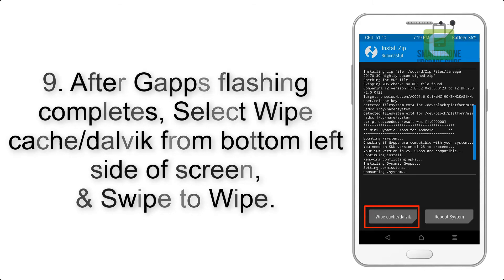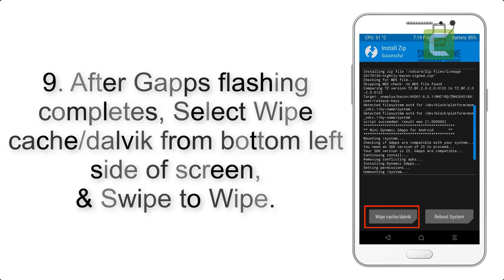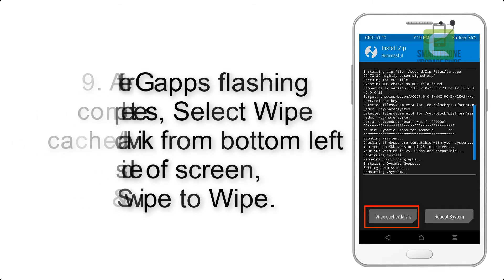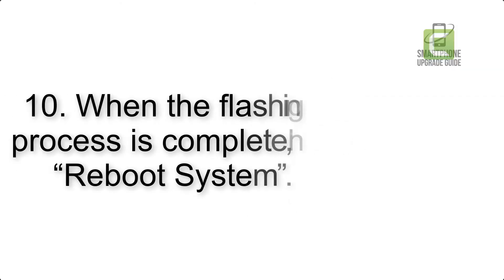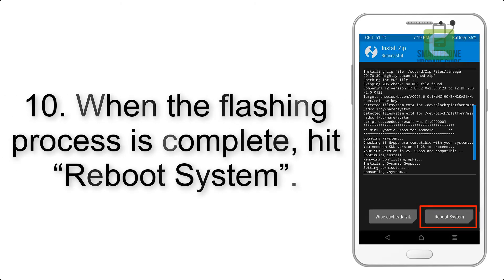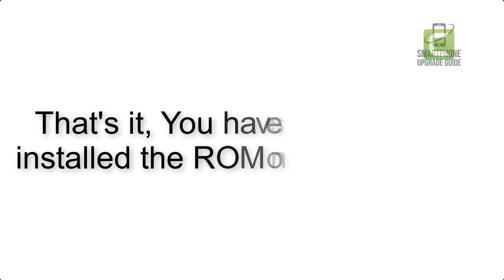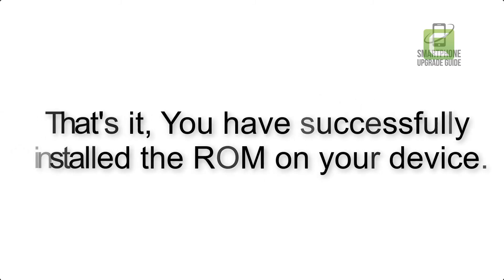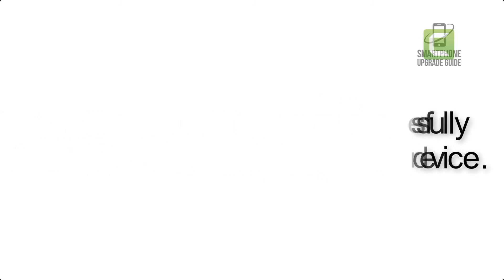Step 9: After GApps flashing completes, select Wipe Cache and Dalvik from the bottom left side of the screen and swipe to wipe. Step 10: When the flashing process is complete, hit Reboot System. That's it — you have successfully installed the ROM on your device.